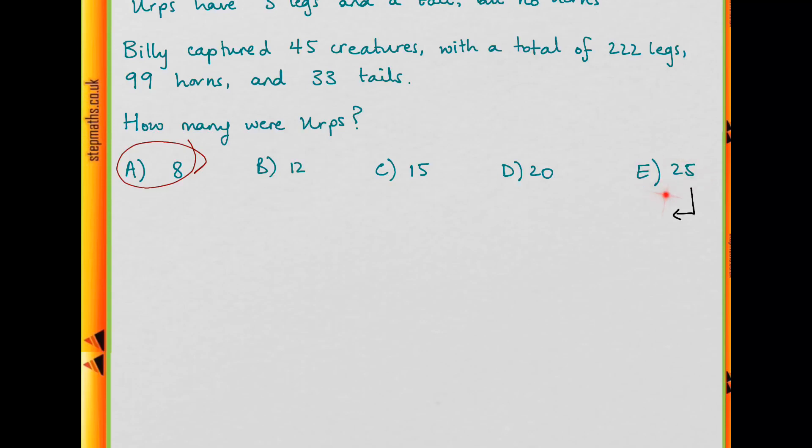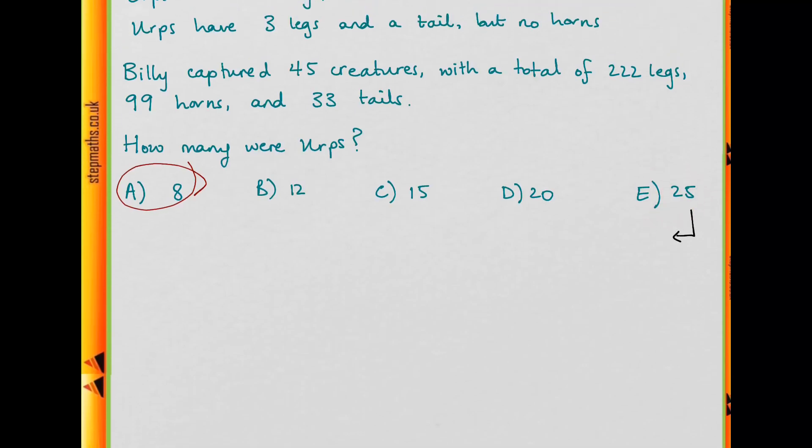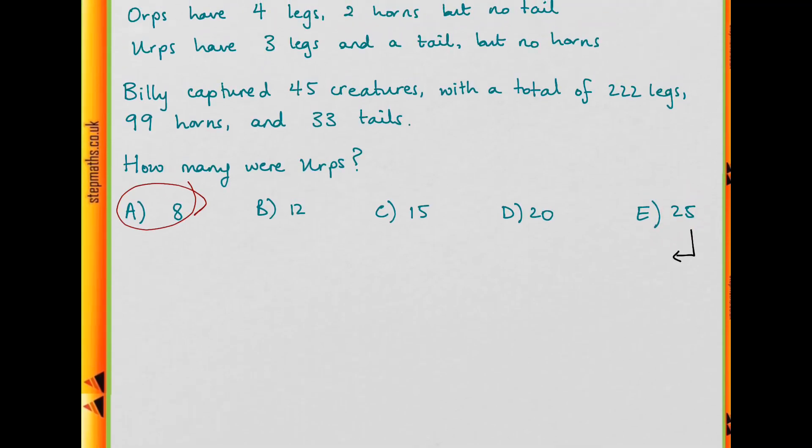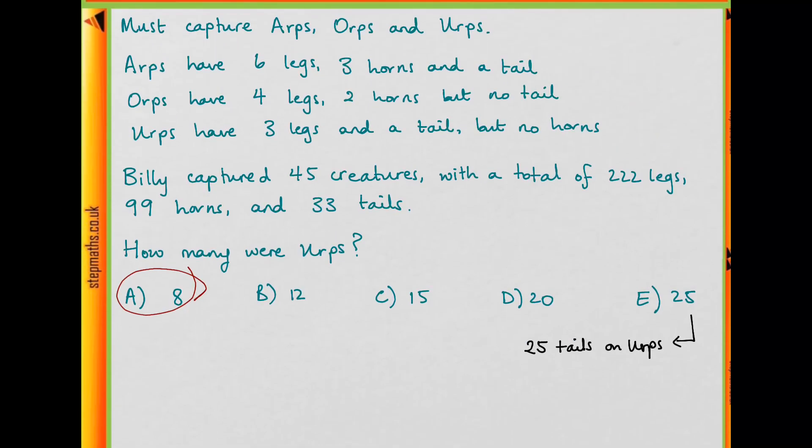If I had 25 Earps, that gives me 25 tails. And we have 33 tails in total. Minus 25 gives us 8 remaining tails. And they must all come from Arps. So we have 8 Arps. And we have 25 Earps. 8 Arps gives us 33 creatures. And there's 45 in total. So we're going to have 12 of the Orps.